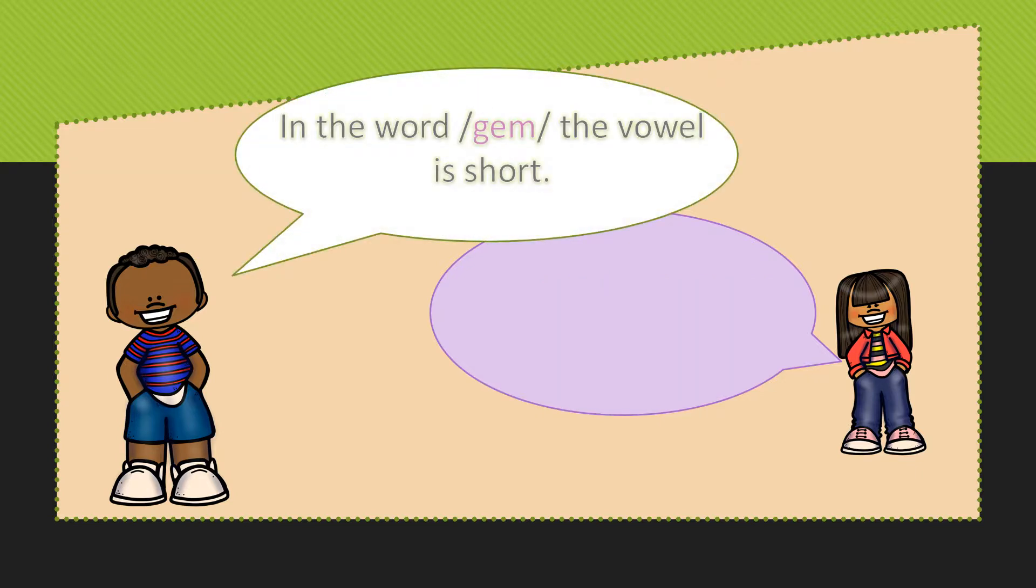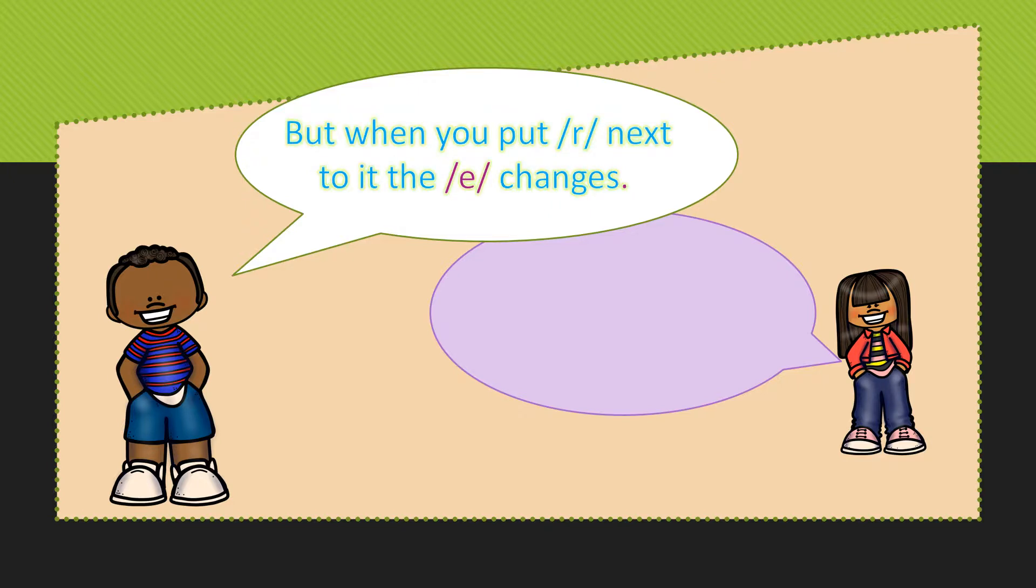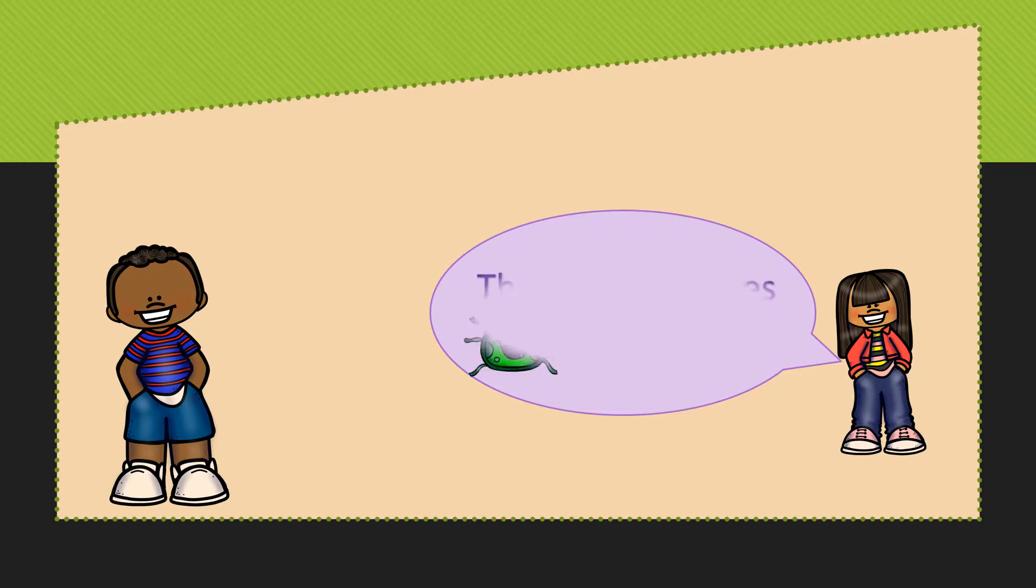In the word gem, the vowel is short, saying E, but when you put an R next to it, the E turns into ER and the word becomes germ.